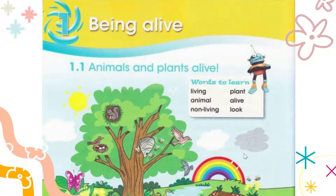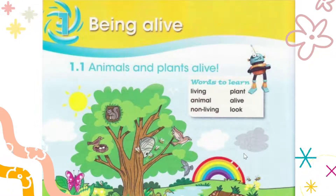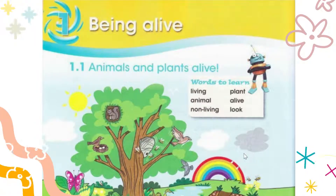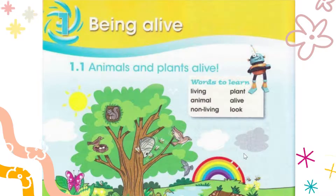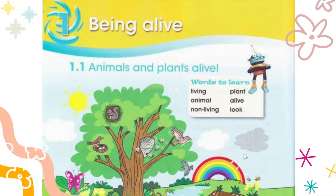Hi guys, welcome back to my channel Study B. Here we are starting with one of our new subjects — that is Science for Grade 1 Cambridge. Our first topic is 'Being Alive.' Science is one of the most interesting topics and it's one of my favorites. I hope you guys will get along with me, so let's start. First of all, the topic is 'Being Alive' — animals and plants are alive.